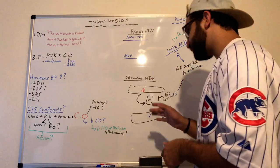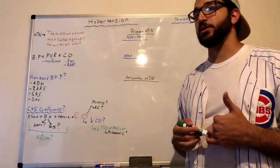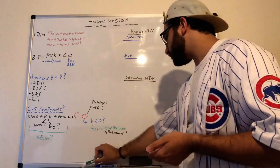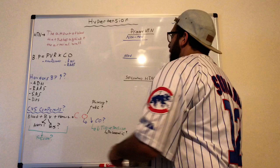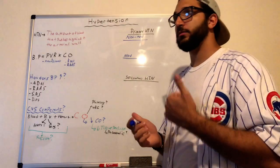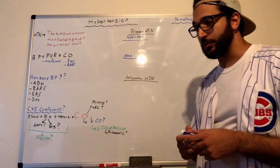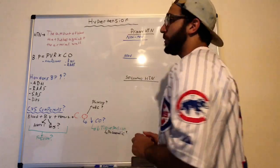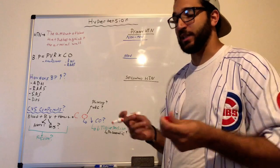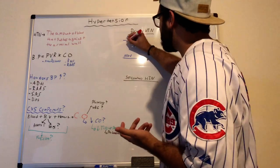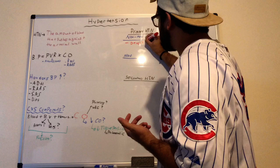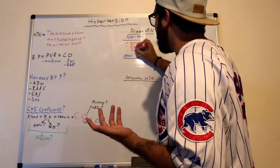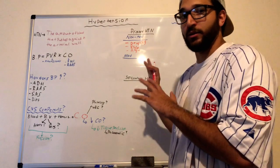There are different types of hypertension: primary and secondary. Primary hypertension has non-modifiable and modifiable risk factors. Non-modifiable factors include genetics, race, and age — we can't change those.